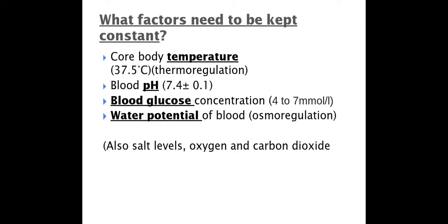So, there are a couple of factors that we need to keep constant within our body. We've got temperature, pH, blood glucose and water potential. They're the main ones that we need to keep within a certain range. We're going to take a quick look at each one as to why in a bit more detail.